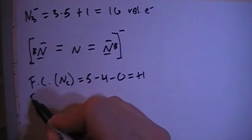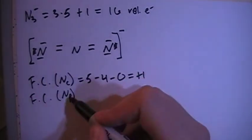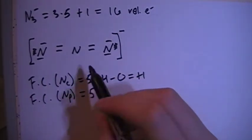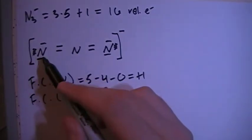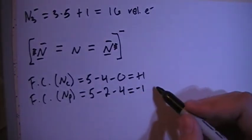Now we can check the formal charges on the nitrogen peripheral, so the outside ones, N sub P. It's going to be 5 valence brought in, minus 2 bonds on each one, minus 1, 2, 3, 4 non-bonding electrons on each one, which gives us a minus 1 charge, and multiply that times 2 because there's 2 of those peripheral nitrogens.